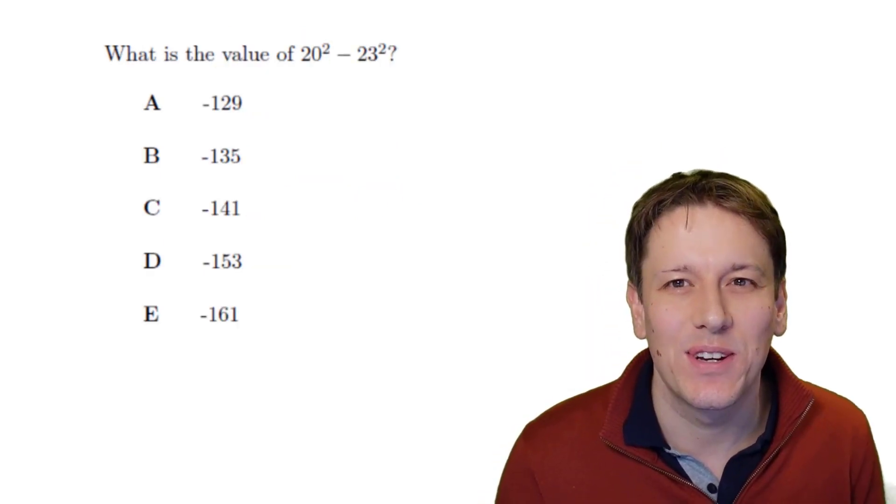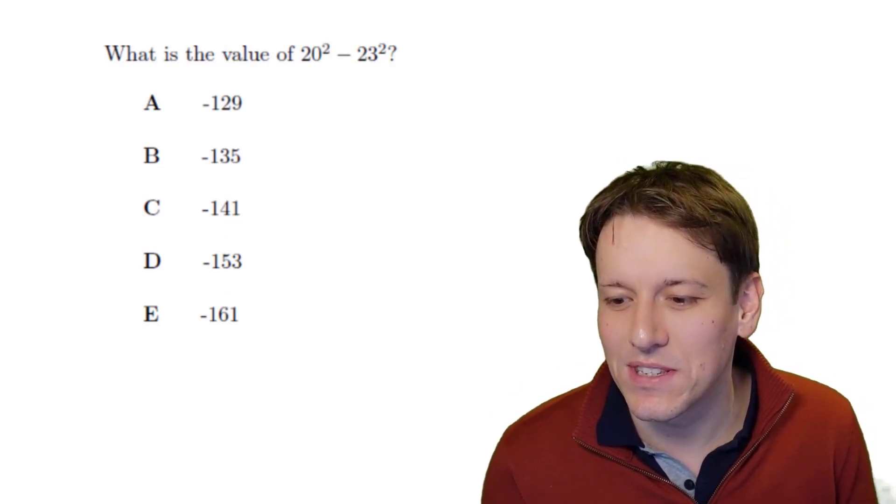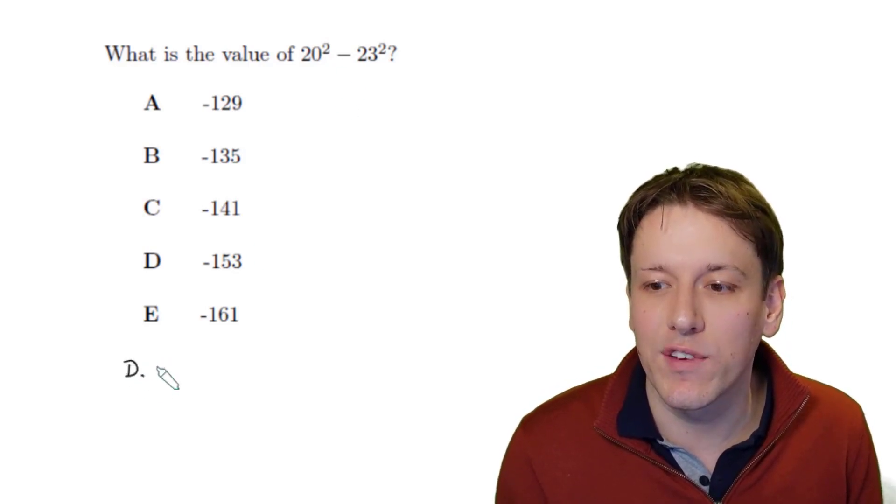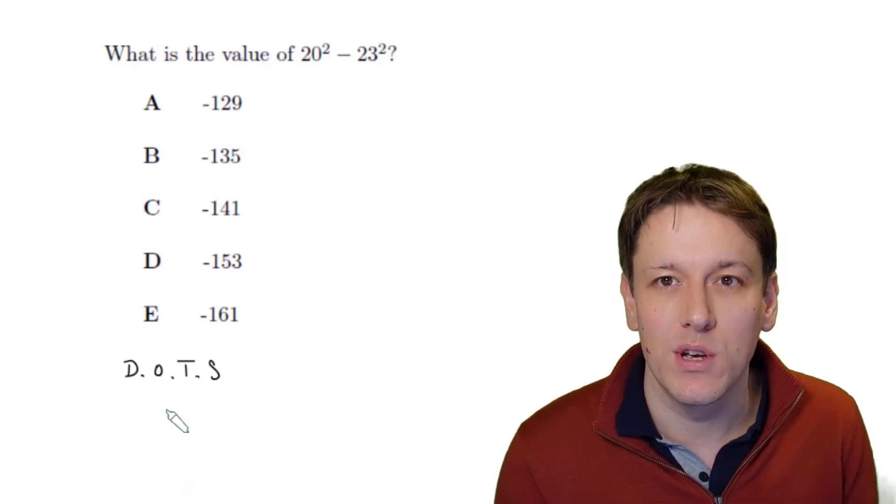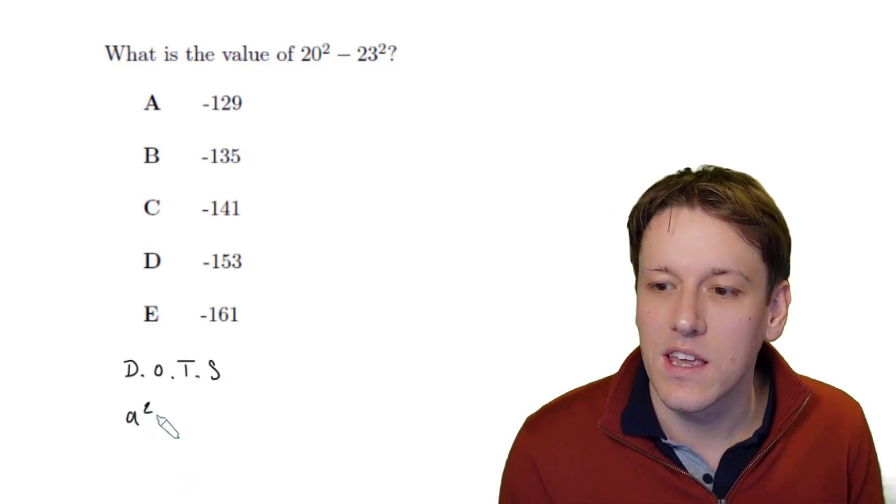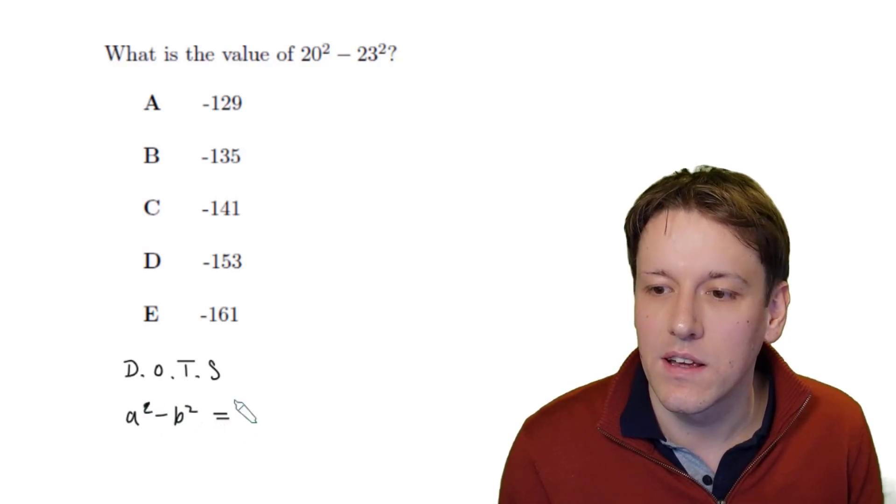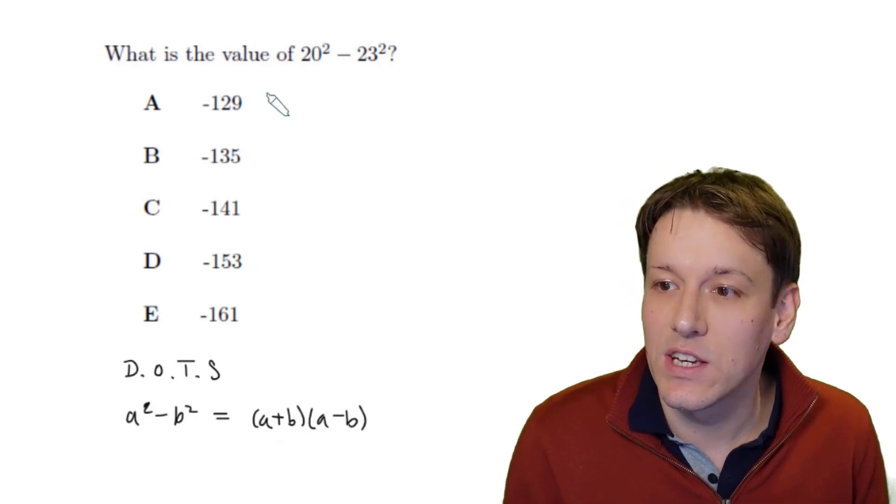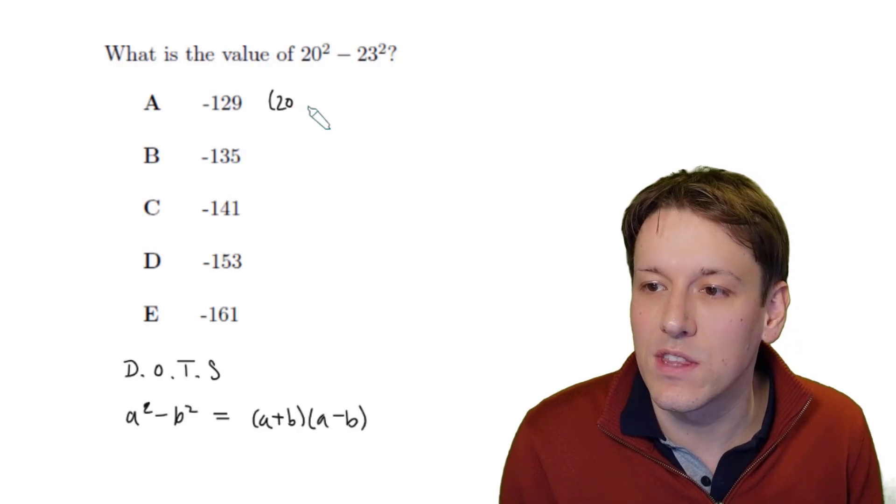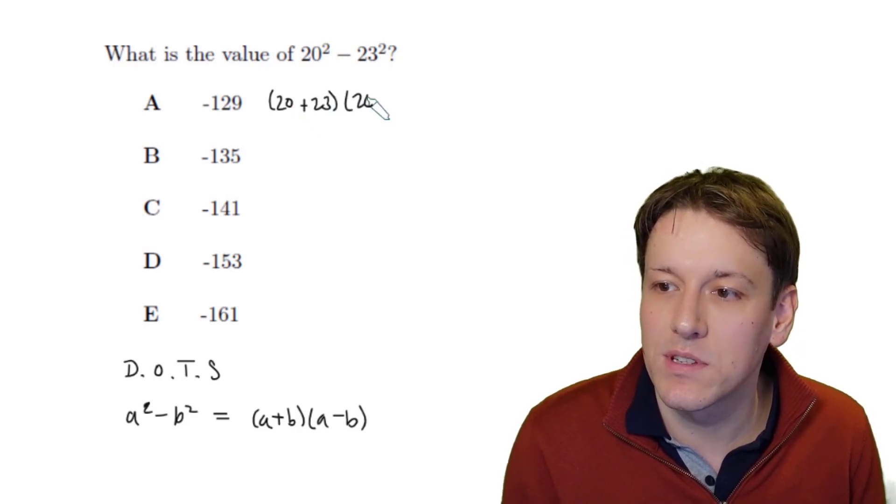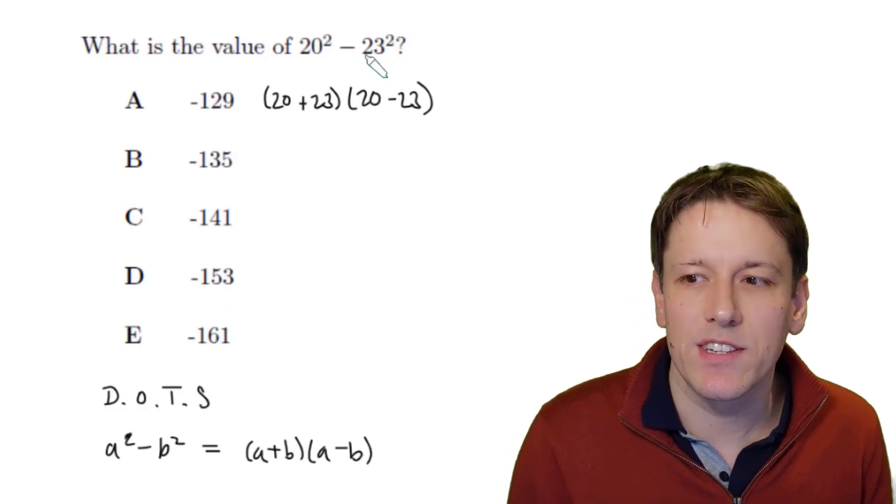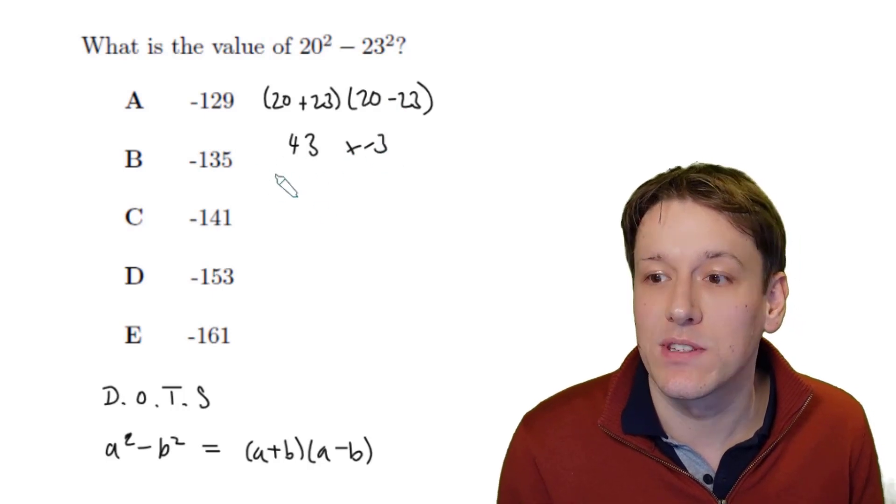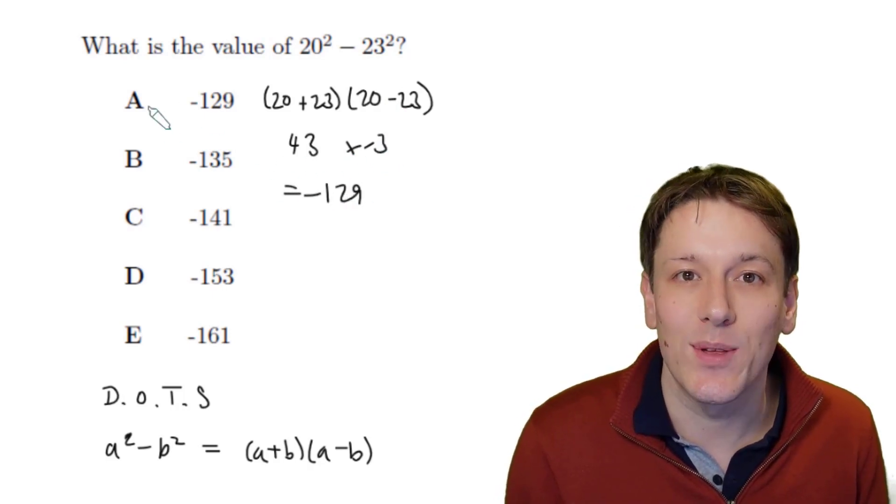It's another maths challenge question that could come up in 2023 because it's got the year 2023 in it, 20²-23². When you see something of this form, you should immediately think of the famous difference of two squares, sometimes written DOTS formula, which says that if I've got A²-B², that's the same thing as (A+B)(A-B). So in this case, we've got A is 20 and B is 23, so I've got (20+23)(20-23), 20+23 is 43, 20-23 is -3. When I multiply those together, I get -129, and so the answer is A.